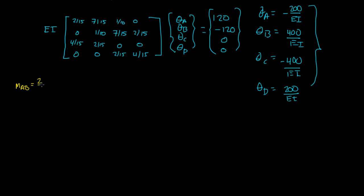And remember, MAB was 2 over 15 times EI. Then you have 2 theta A plus theta B. And if we plugged in theta A and theta B, we should get 2 EI over 15 times 2 theta A was negative 200 over EI plus theta B. And you'll notice that the EI's cancel out. And if you solve this, you get 2 times negative 200 is negative 400 plus 400 is 0. 0 kip foot.